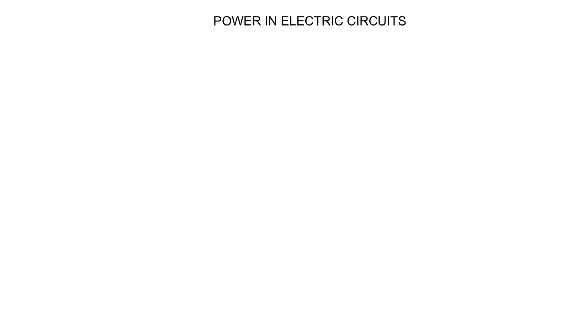In this short video clip I'm going to discuss power in electric circuits and together with power, the brightness of light bulbs. It's very important to remember that power and brightness are interrelated. This is the standard formula we use to calculate power when we have the potential difference across the resistor as well as the current that flows through the resistor.